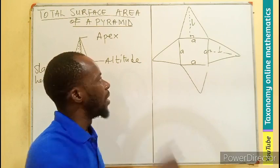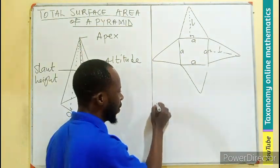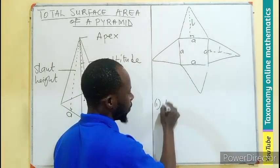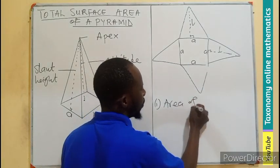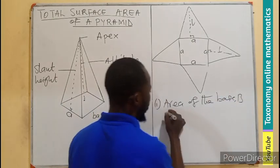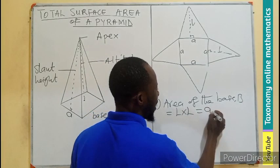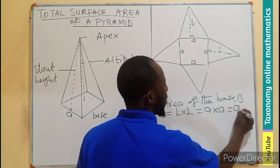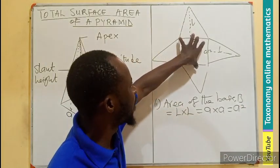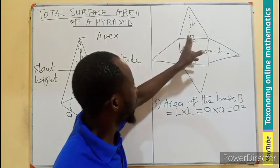Now I can find the surface area covered by this pyramid. First, let me find the area of the base. Area of base B equals length times length, since it is a square: a × a = a². That is the first component — the base covers an area of a².